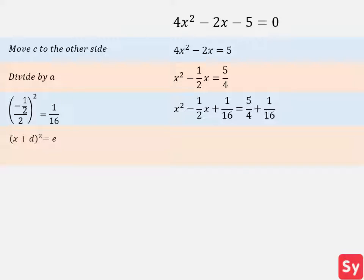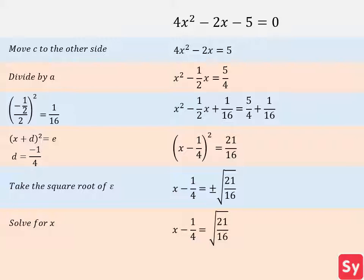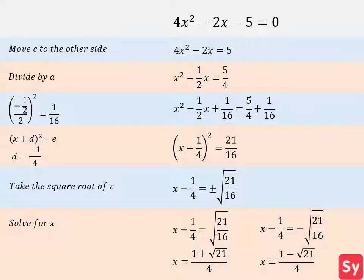Now we rewrite the equation in square form. We know d equals negative 1 fourth, so we plug this in. Next, we take the square root of 21 over 16. Now we can solve for x: x minus 1 fourth equals the square root of 21 over 16, and x minus 1 fourth equals negative square root of 21 over 16. So x equals 1 plus the square root of 21 over 4, and 1 minus the square root of 21 over 4.